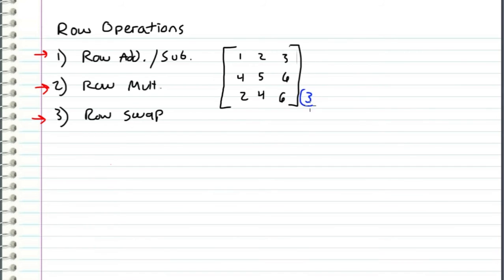for example, I can take the third row, and I can add a multiple of the first row. So in this case, I'm going to take the third row, and I'm going to add just one times the first row. And what I'm left with is a row equivalent matrix,